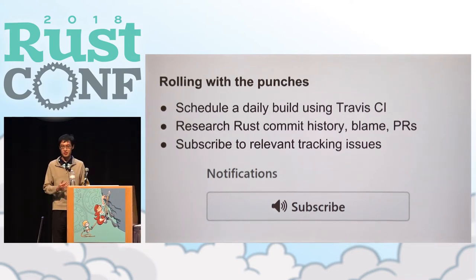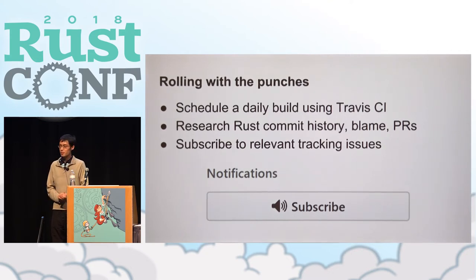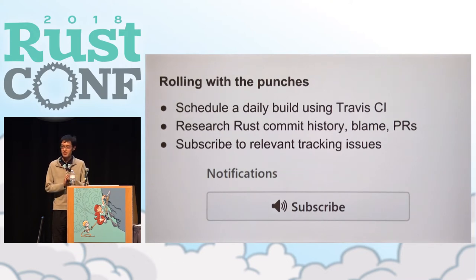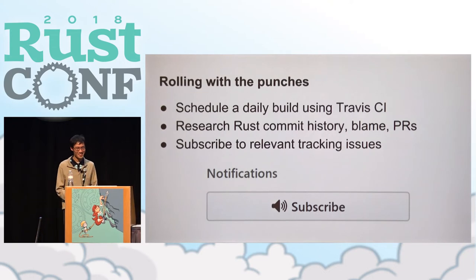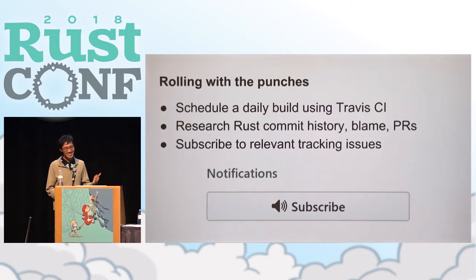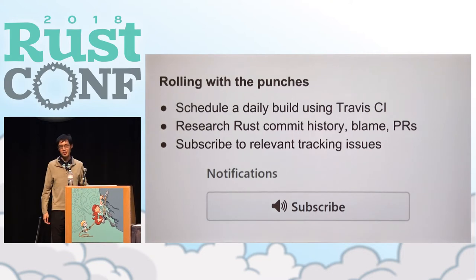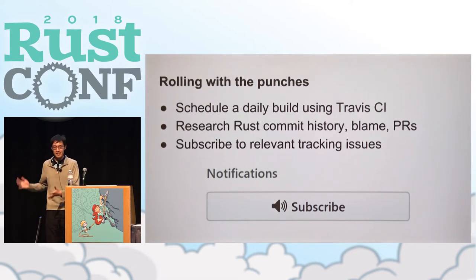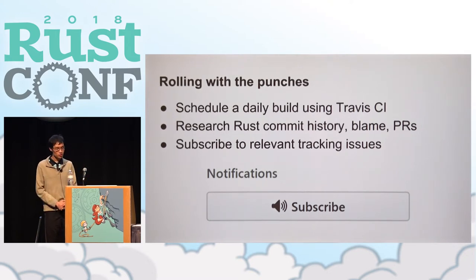Here are some of the strategies I used to manage all of these breaking changes. Most importantly, I scheduled a daily build using Travis CI — the exact CI tool doesn't matter that much. The important thing was it was a daily build, because Rust nightly happens every night. That means if you notice your build breaks, you know with relative certainty what exact change broke your build, and that narrows down your search quite a bit.